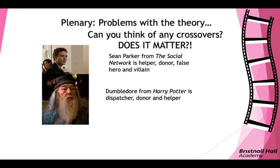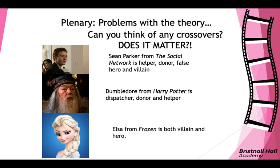Dumbledore in Harry Potter is the dispatcher, the donor, and the helper all at once. Elsa from Frozen is both a villain and a hero — you might call her a false hero, or argue that Anna is the real hero. As a final task, explain: does it matter that there's a lot of crossover? Does that spoil or ruin the usefulness of the theory? Pause the video, write that down, and you're done. Thank you and see you in the next video.